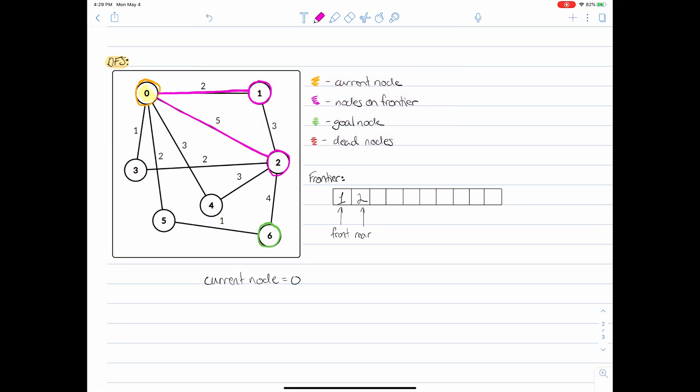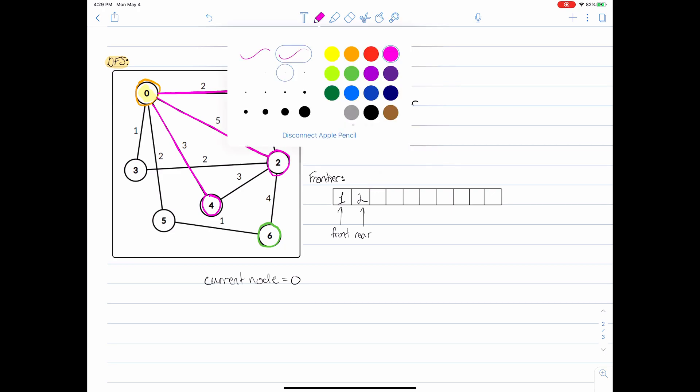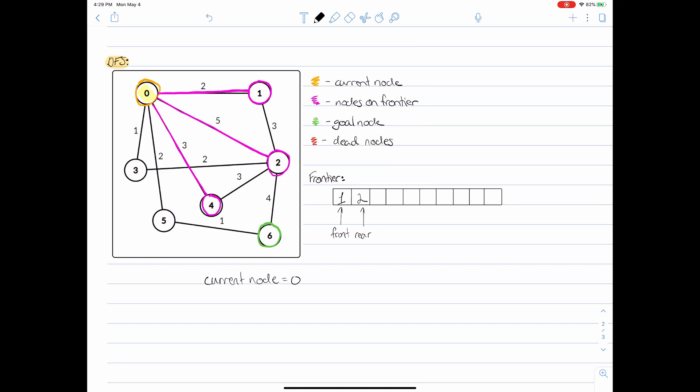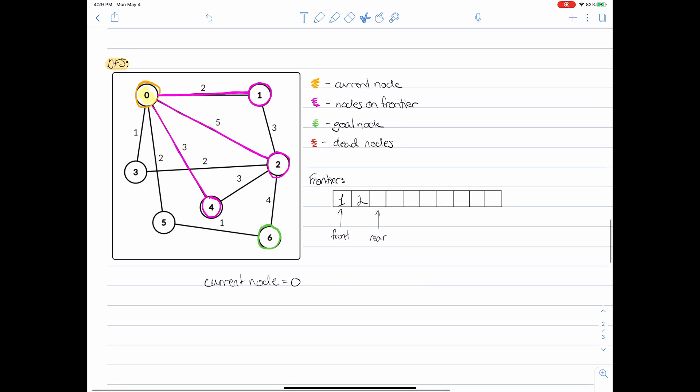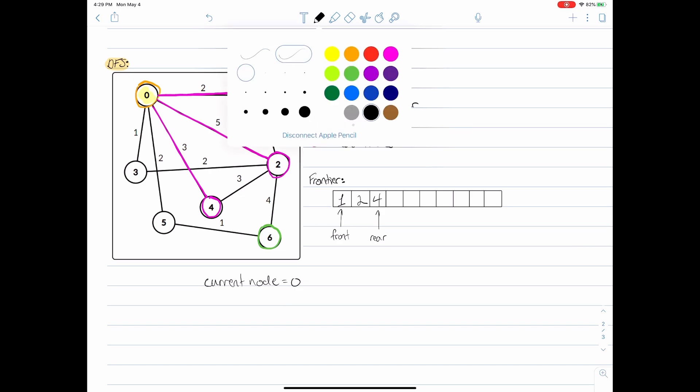Repeat this process for node four which is the next successor of node zero. Pop the big question: Is it the goal node? Nope. So now we're going to put it in our frontier. We're going to move the rear value and then we're going to put in number four. So far so good.